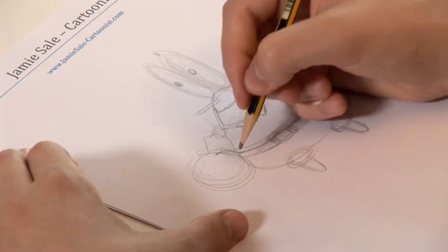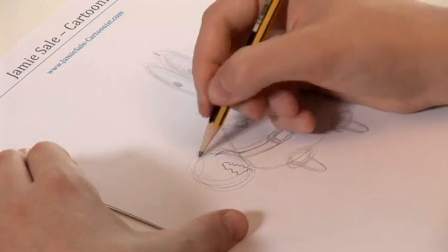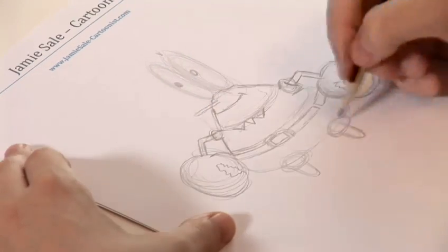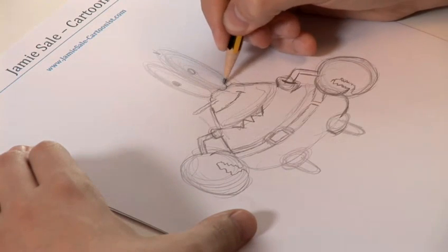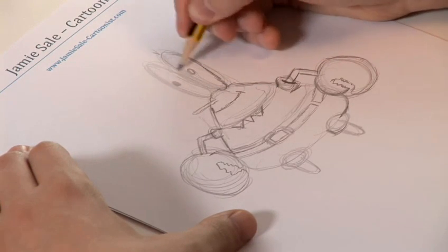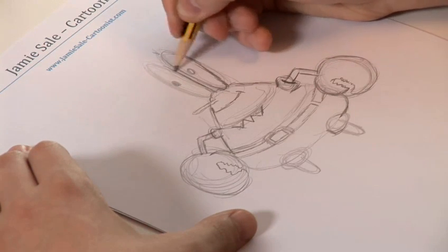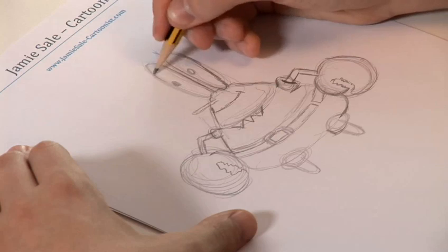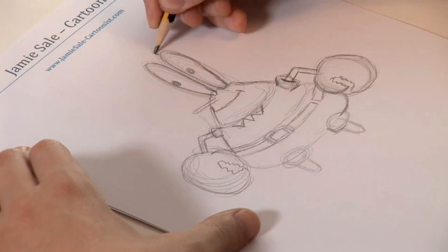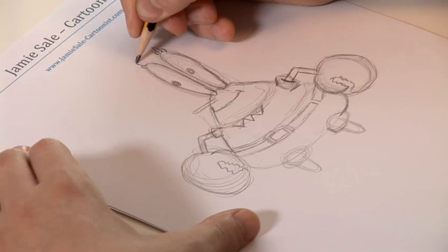And then we repeat the same for this claw. So we'll do his eyes in a bit more detail now. They tend to get bigger as they go out. And he's got funny shaped eyelashes on top of his eyes.